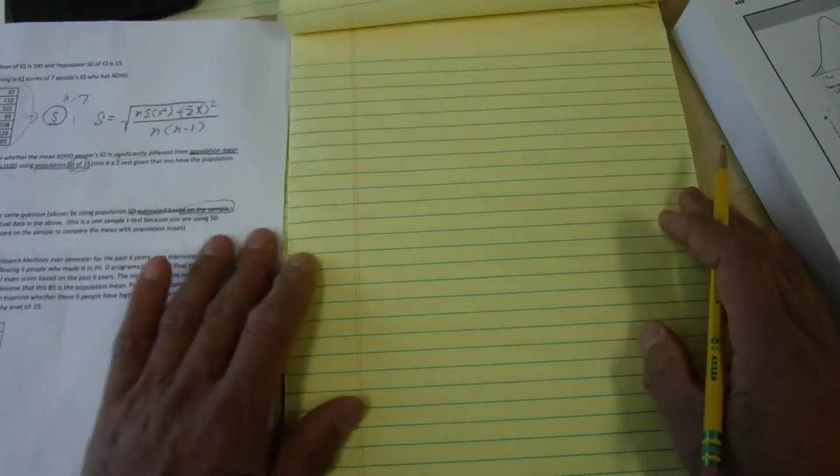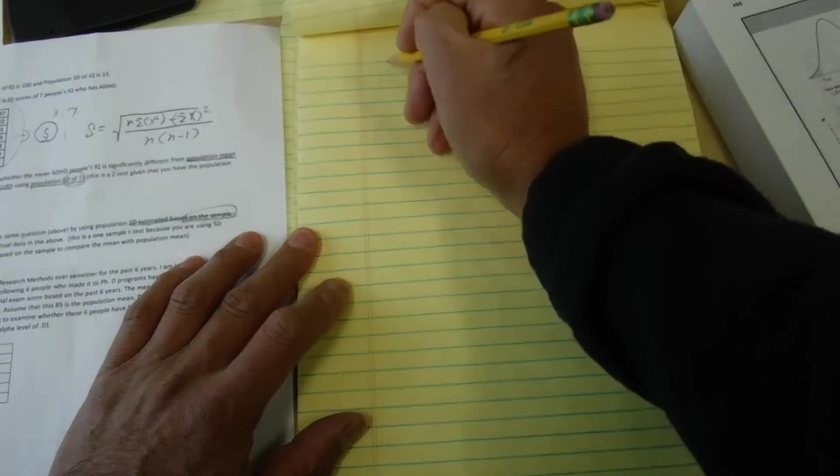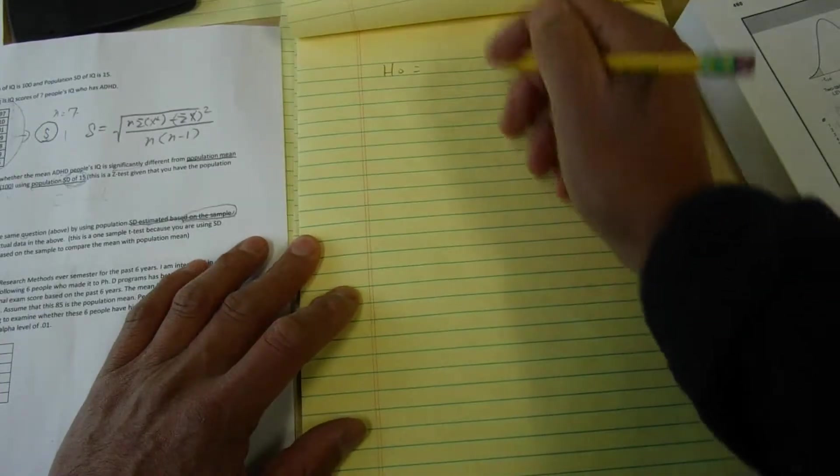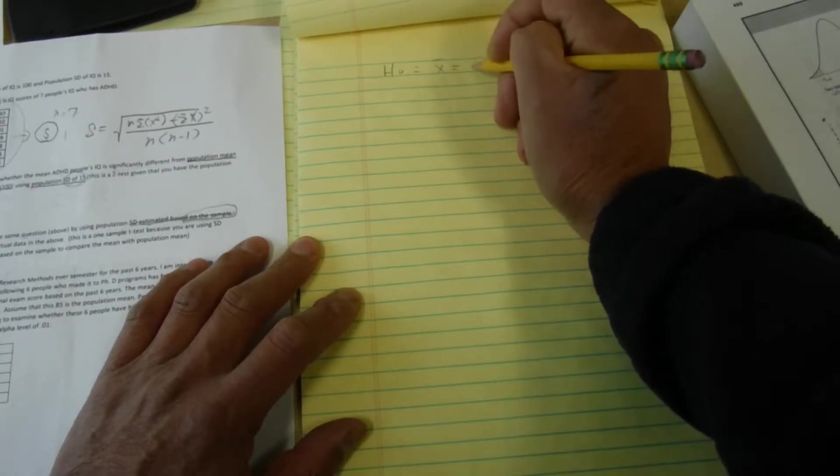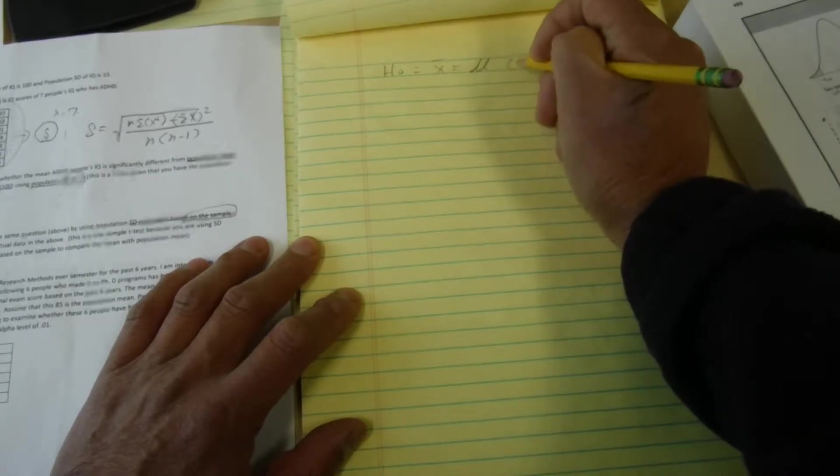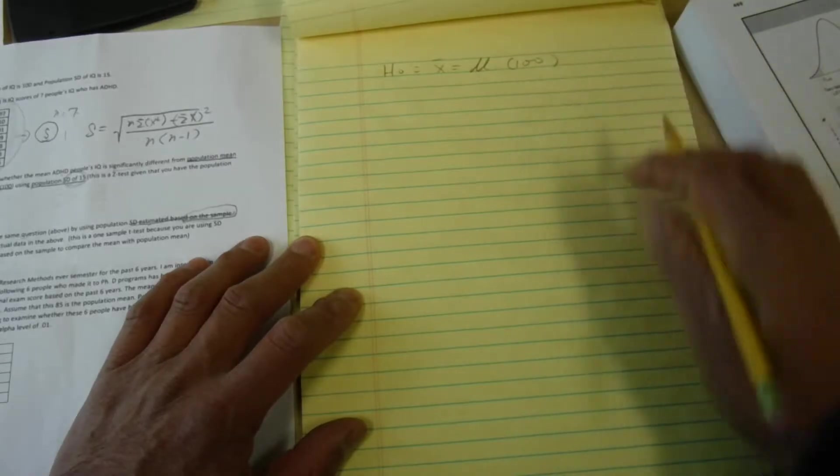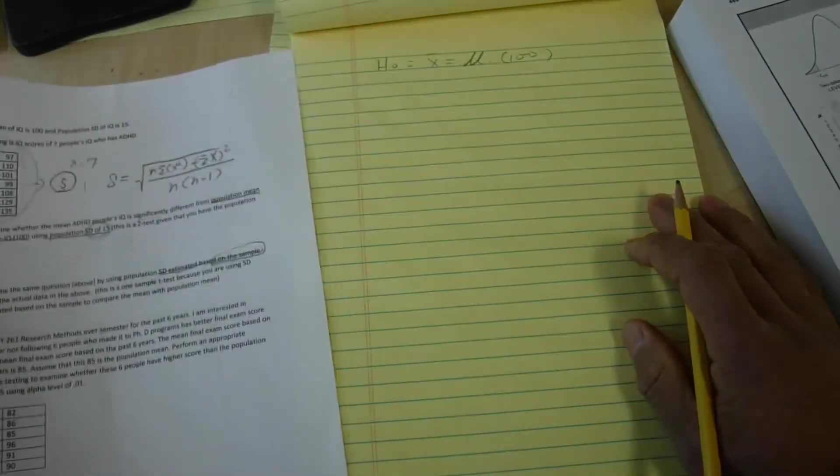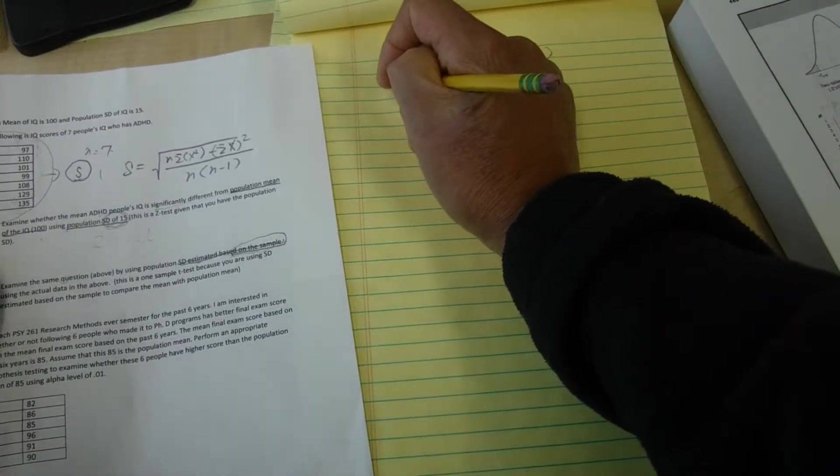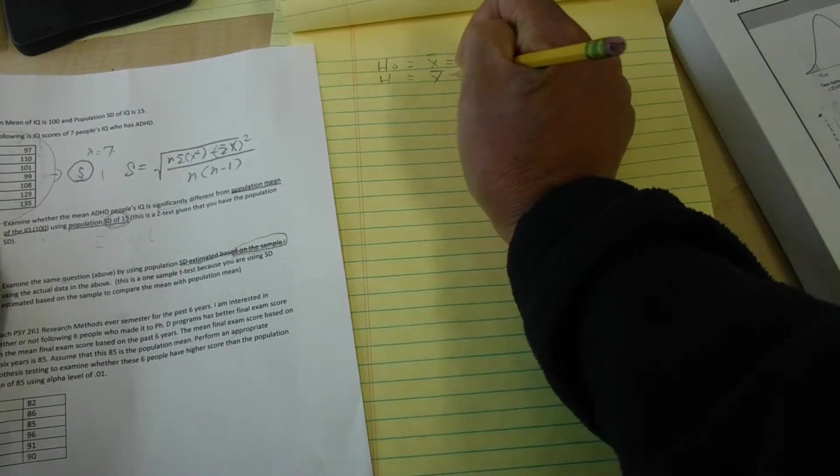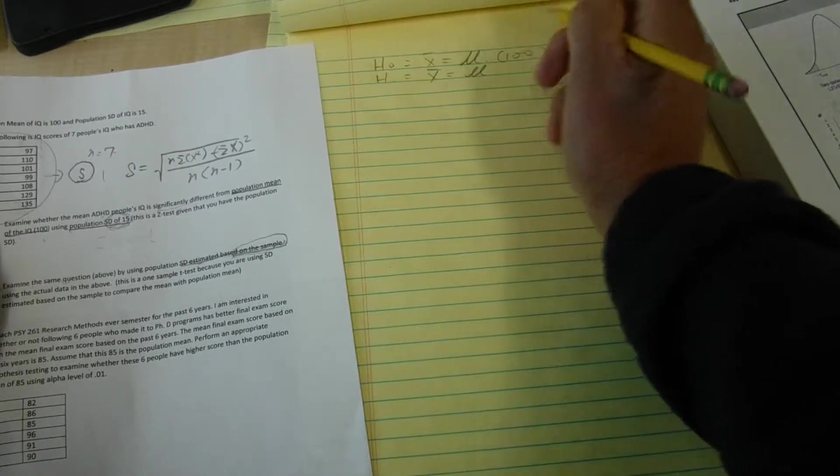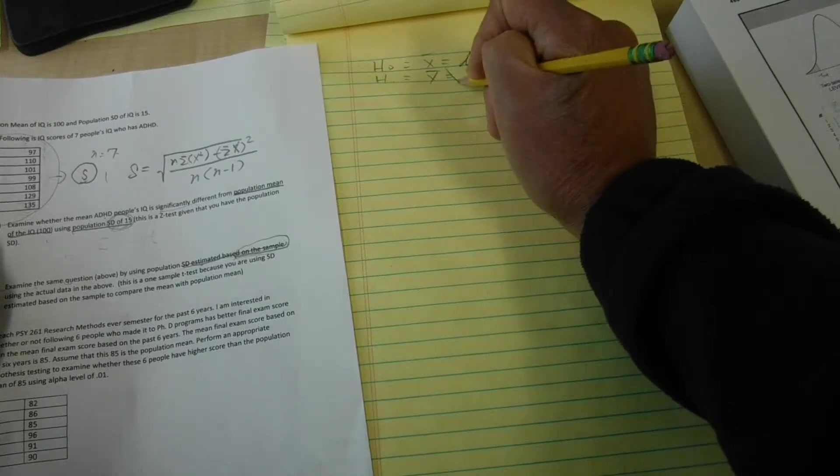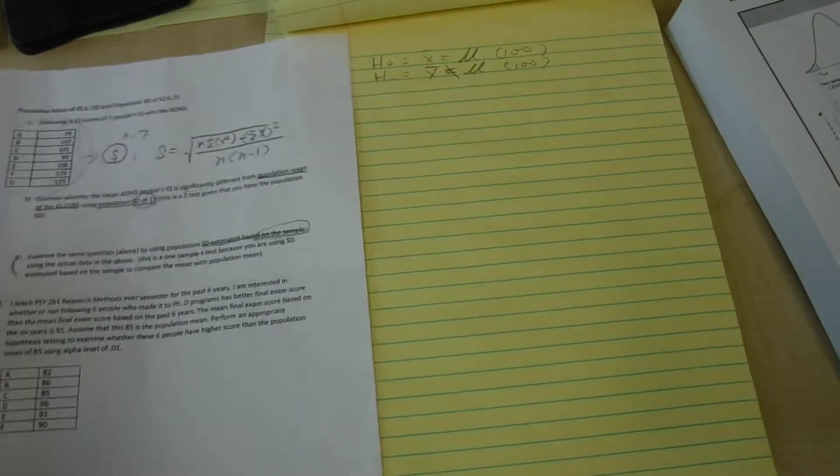So this one sample t-test, the first thing is you have to specify the null hypothesis. So the mean equals mu, which is 100. That's the intelligence IQ score to be 100. So it's basically the same as the previous question. Alternative hypothesis is the mean is not the mu, which is not 100. So that's the alternative hypothesis.